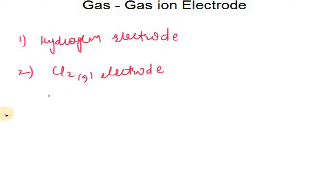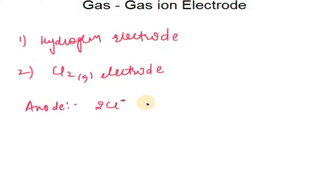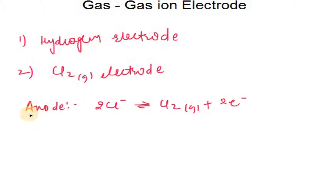If we talk about the anode, the representation at the anode is: 2 Cl⁻ is being converted into Cl₂ in gaseous form plus 2 electrons. And here is the representation of the cell.